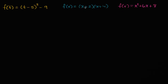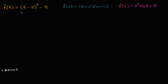I have three different functions here. I know they're all called f, but we'll just assume they are different functions. For each of these, I want to do three things: find the zeros — the input values that make the value of the function equal to zero — find the coordinates of the vertex, and find the equation of the line of symmetry.